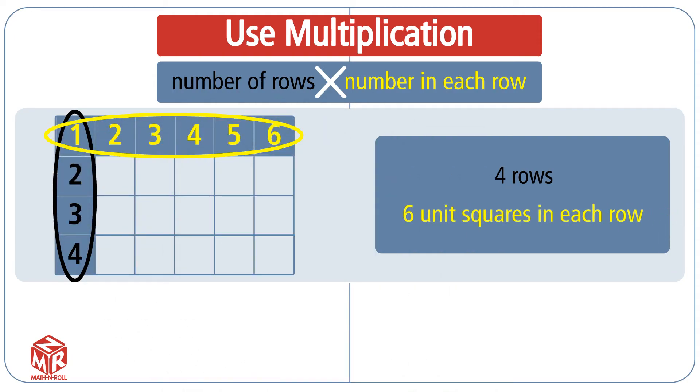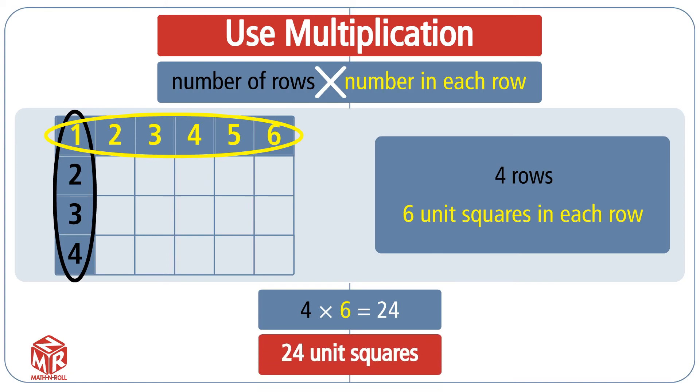To find the total number of squares, we multiply 4 by 6. We get 24. So the area of this rectangle is 24 unit squares.